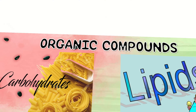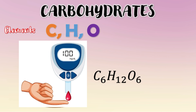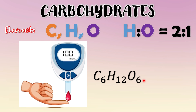Let us start with the most familiar one, which is carbohydrates. Carbohydrates are organic compounds made up of elements such as carbon, hydrogen, and oxygen. One example is glucose or blood sugar, and its chemical formula is C6H12O6. As you can see, it only has carbon, hydrogen, and oxygen. If you look at the chemical formula, the ratio of hydrogen to oxygen is 12 to 6, which simplifies to 2 to 1.